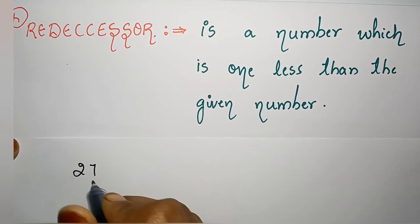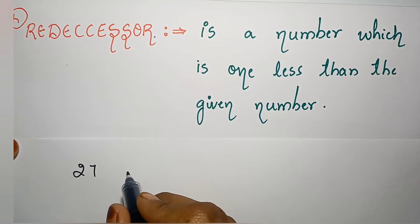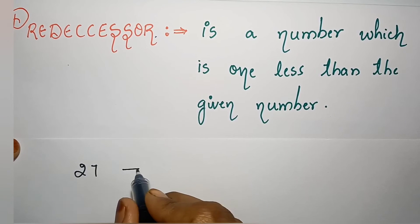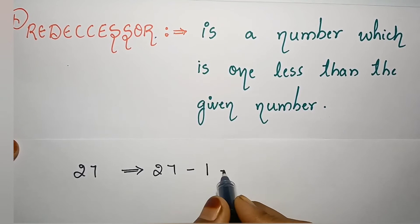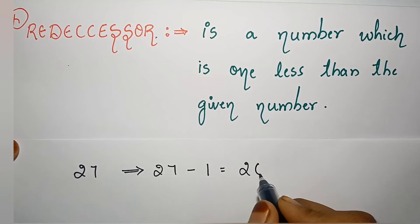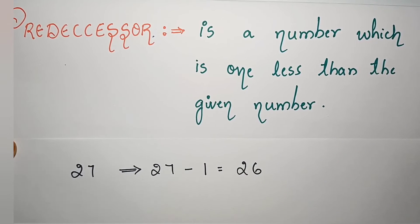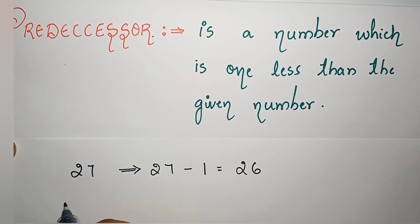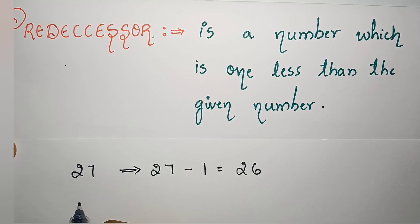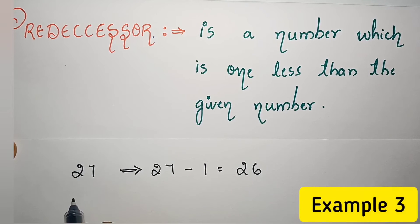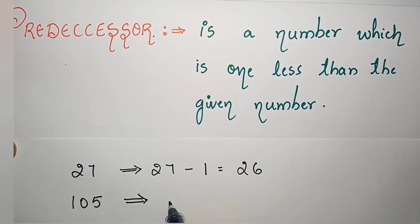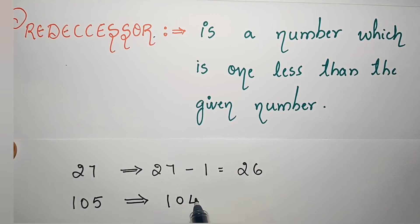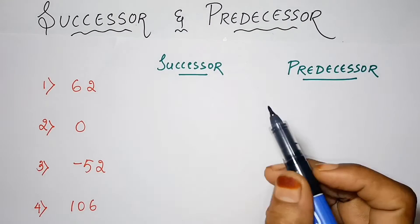Now let's say predecessor of 27 will be 27 minus 1 which is equals to 26. Koi bhi number le lo, koi bhi number ko 1 minus kar le to aapko predecessor mil jaega. Example: 105 — predecessor of 105 will be 104.